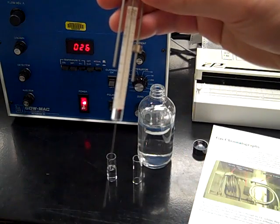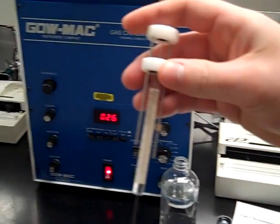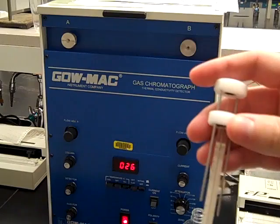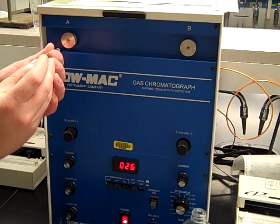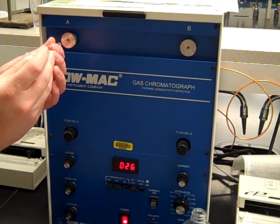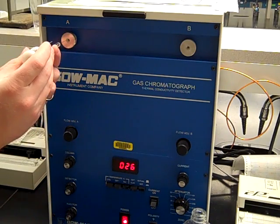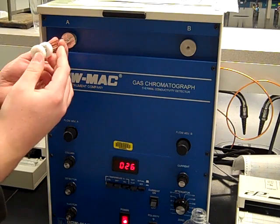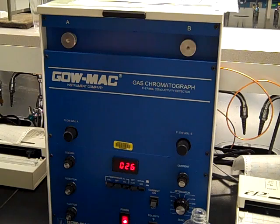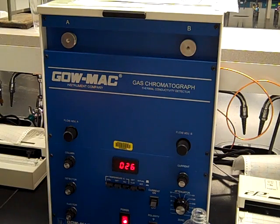Once you've got that one microliter, then you're going to come up to injection port A, and that's where you're going to inject your sample. As you're inputting the sample, you're going to be careful because the needle is going to touch a rubber septum. It's going to put some resistance. Once you push it in all the way, push, pull it out. You want to do that in a quick motion.